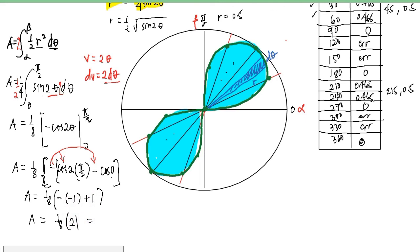Okay, so this is now the area of the lemniscate with an equation of r squared is equal to one-fourth sine of 2 theta.